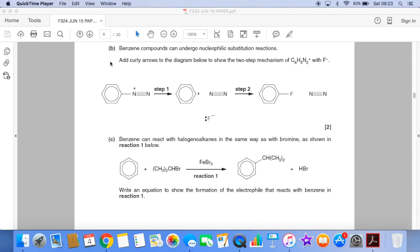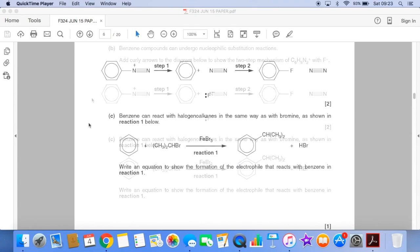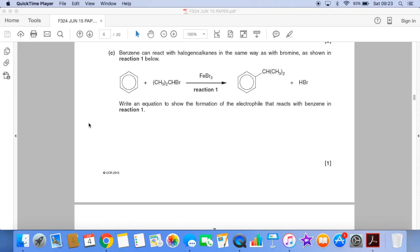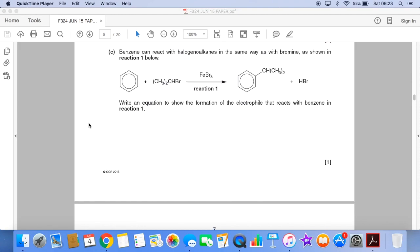At the start of the question, you're told that it can undergo nucleophilic substitution. And we're given a mechanism, but we have to add some curly arrows. Part C is asking you to compare your knowledge of the reaction of benzene with bromine to this example here.